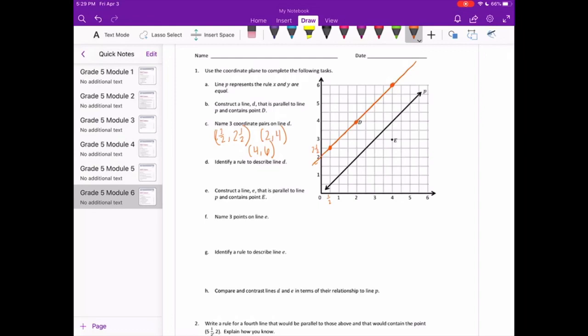So identify the rule to describe line D. What I'm noticing is that X is always 2 less than Y, or we could say Y minus 2 equals X. That would be a good rule. If we take 2 and a half and subtract 2, we get 1 and a half. If we take 4 and subtract 2, we get 2. 6 minus 2 is 4.